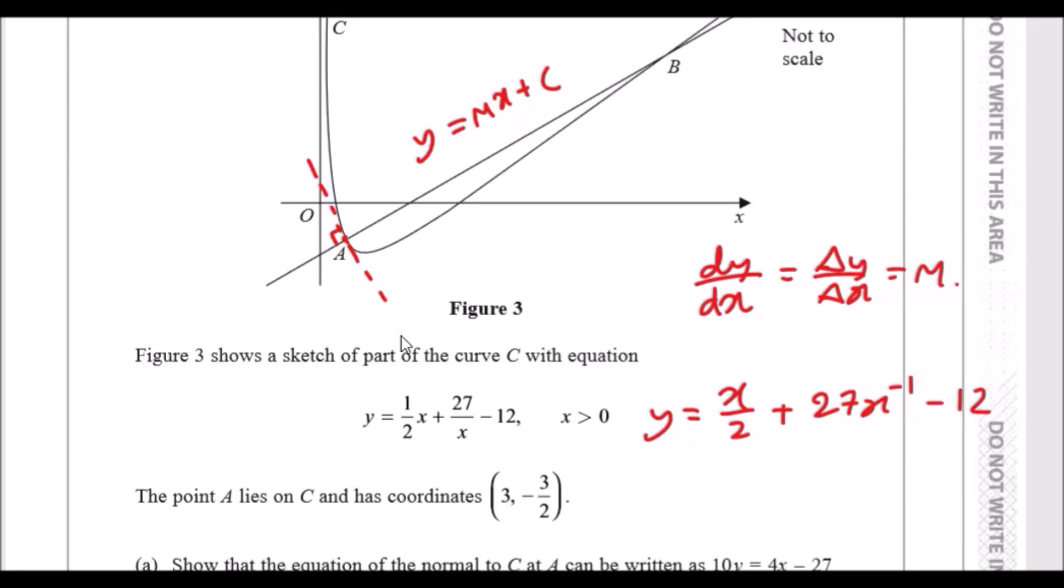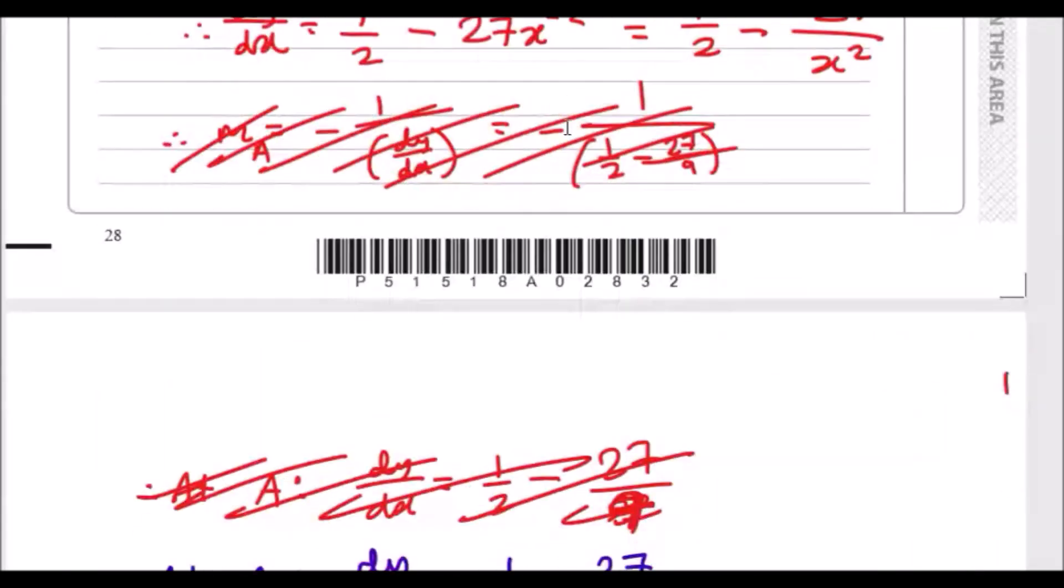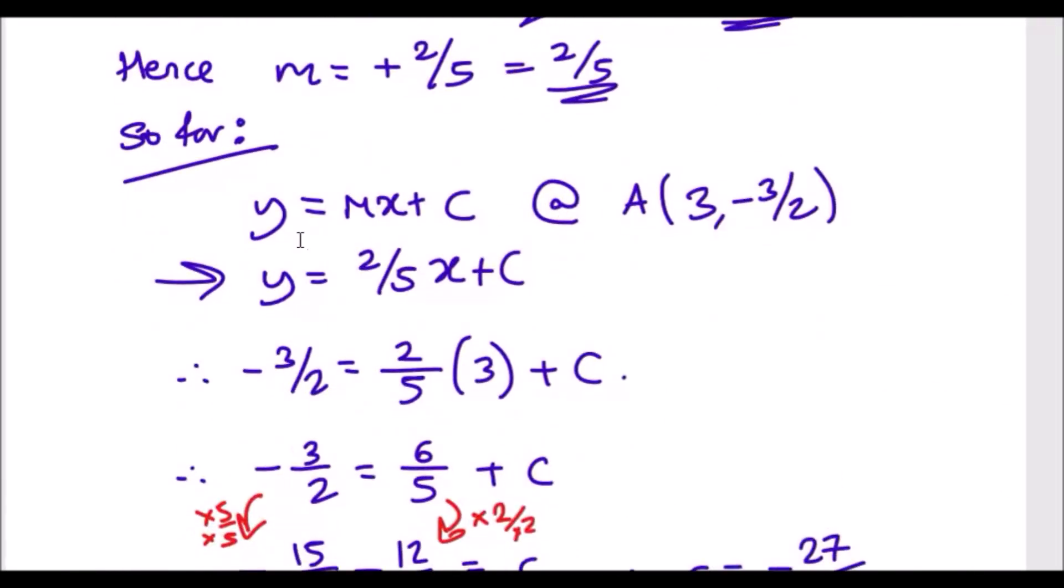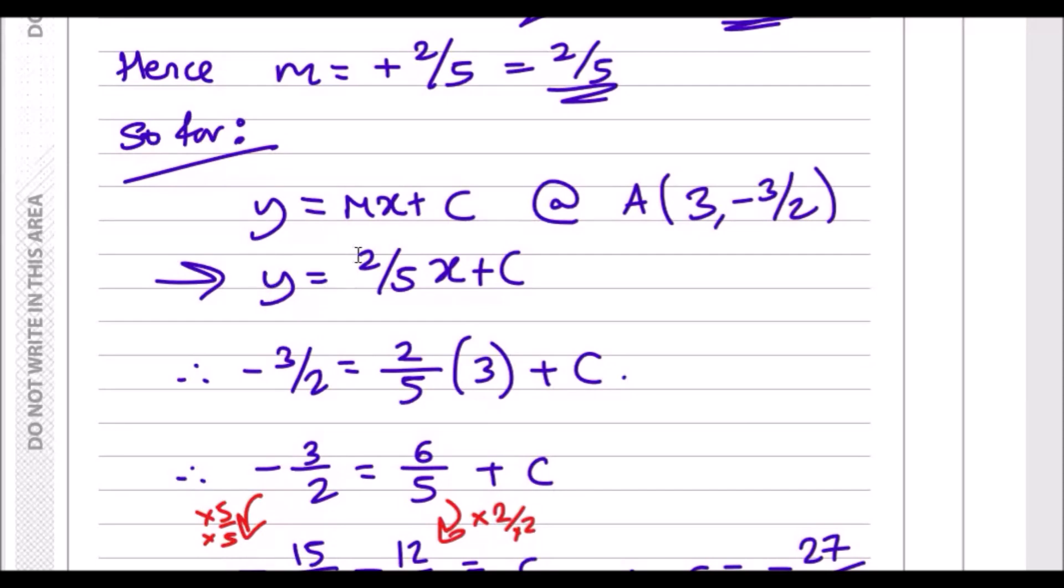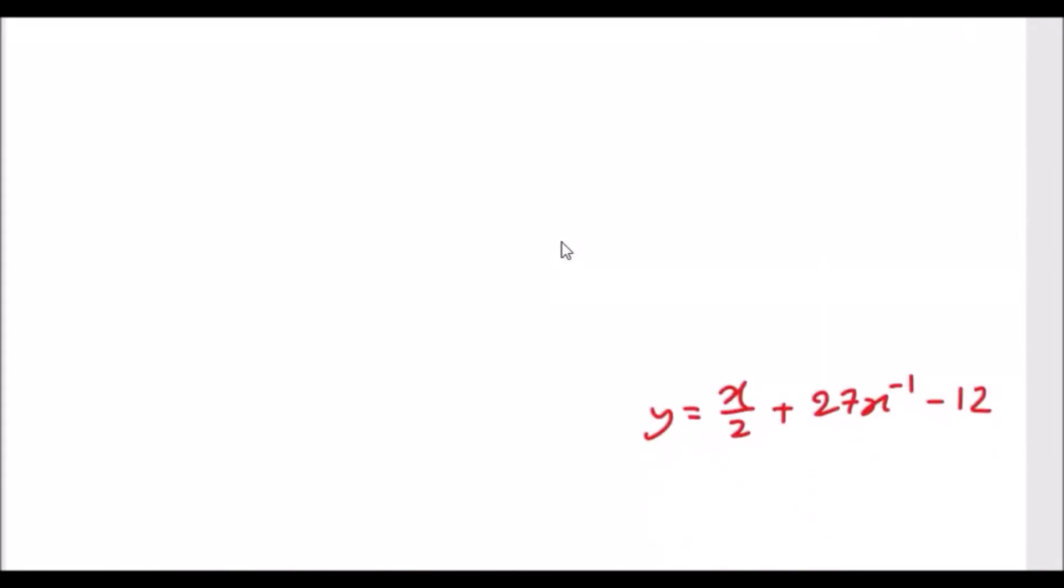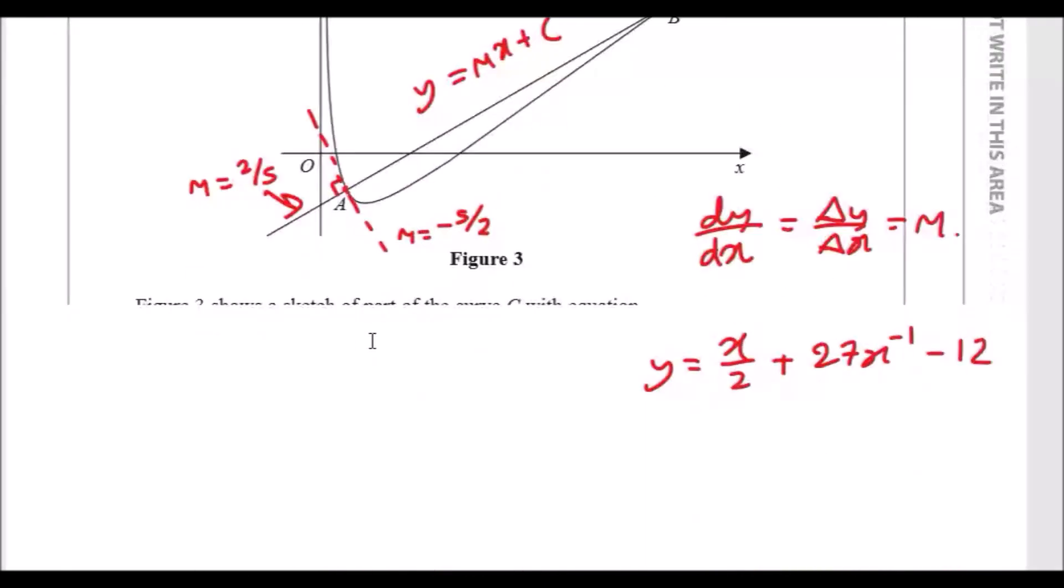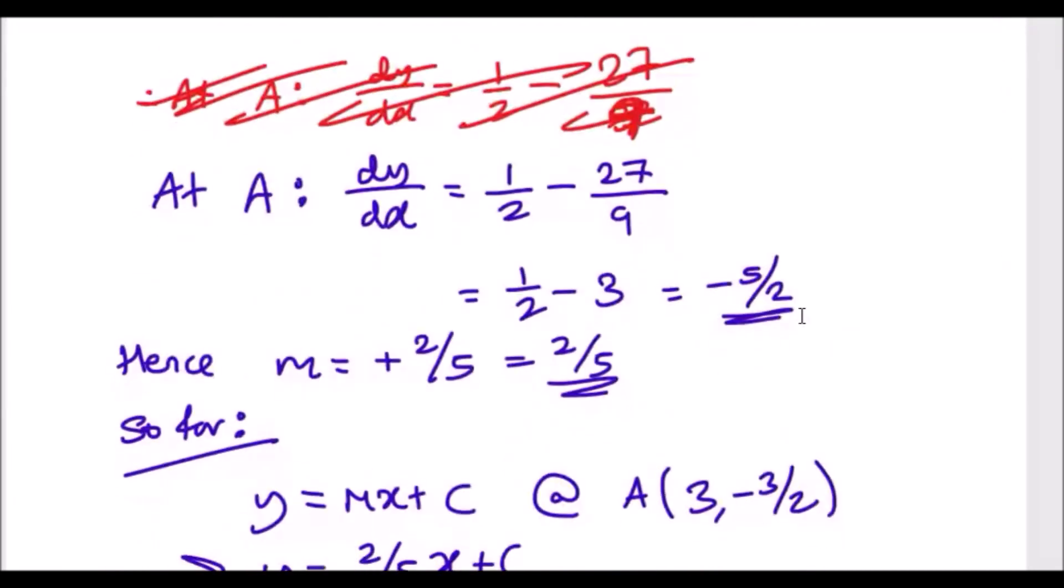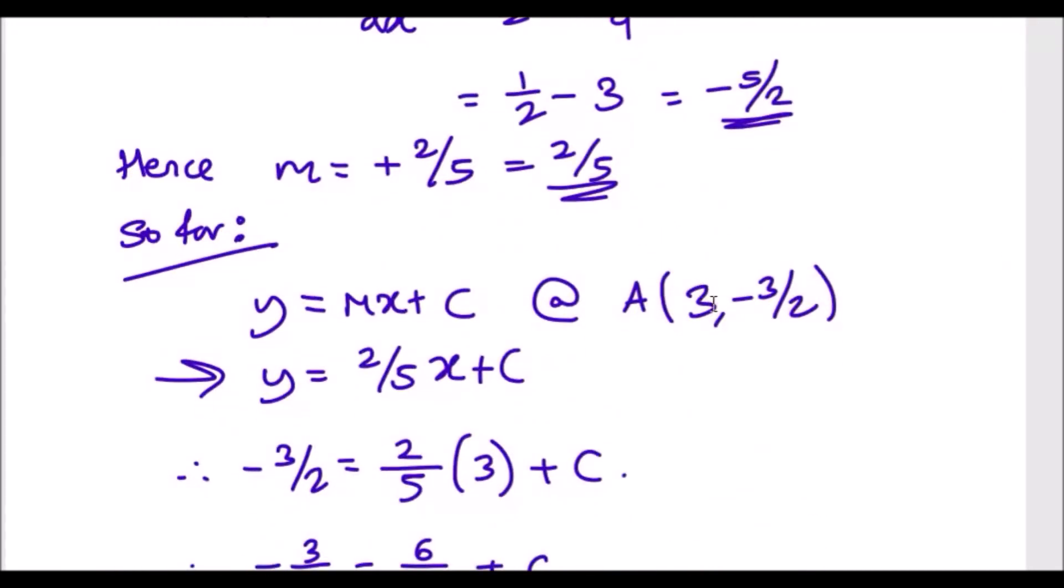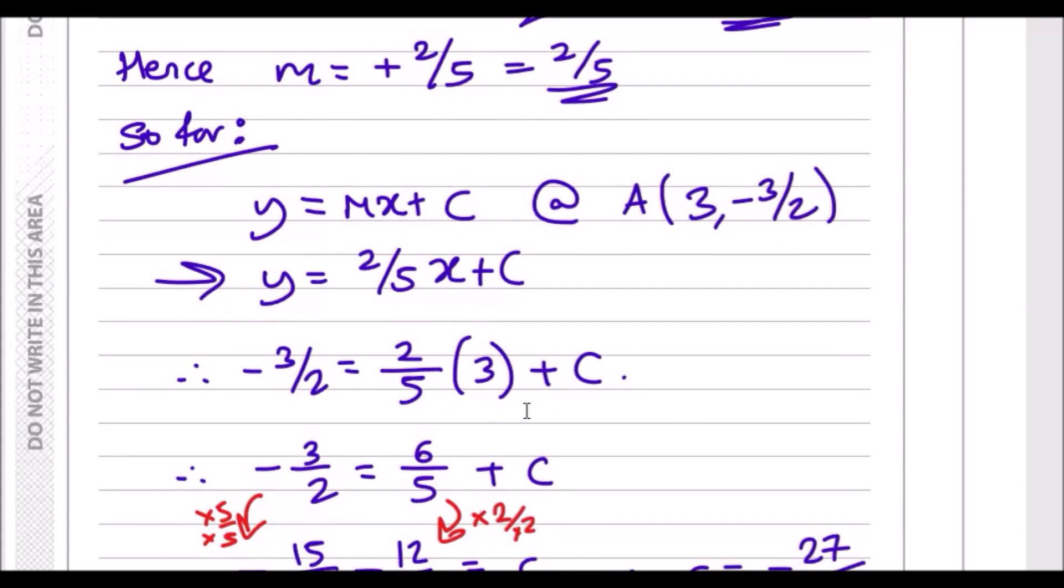The gradient of this line would be minus 5/2, but because this is a perpendicular line, this line would have a gradient of 2/5. So you've changed to a positive and flipped upside down. So we know the gradient now is 2/5x. Now we have y equals 2/5x plus c. And because we know point A is on the line, we know it's 3, minus 3 over 2.